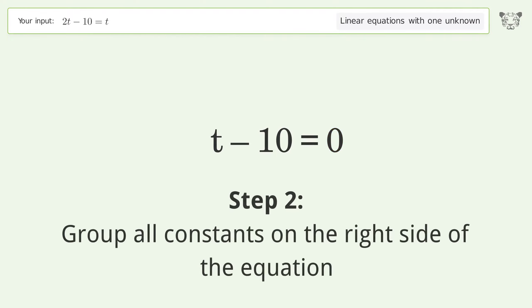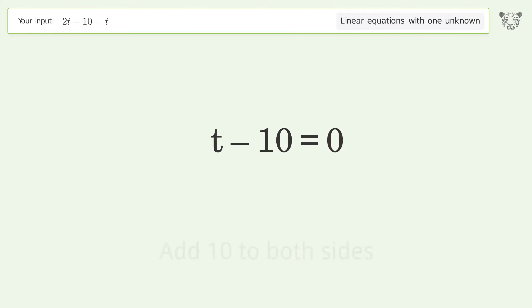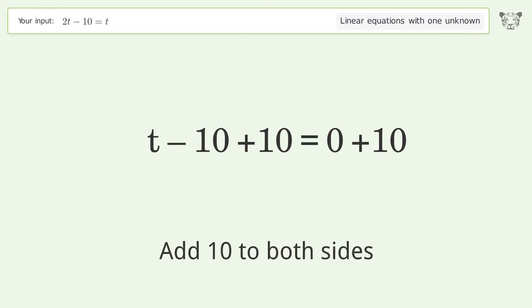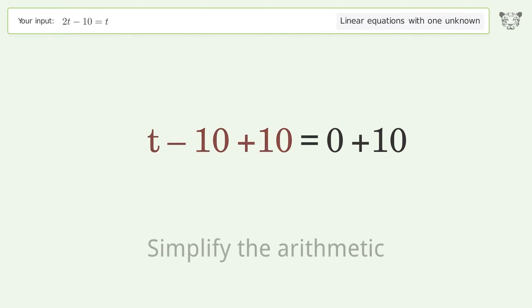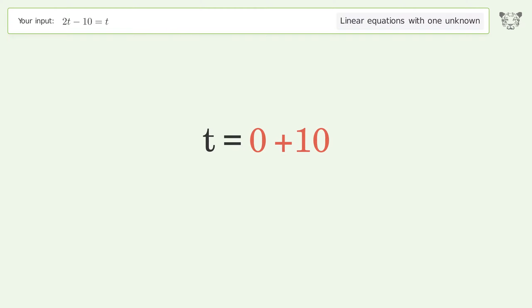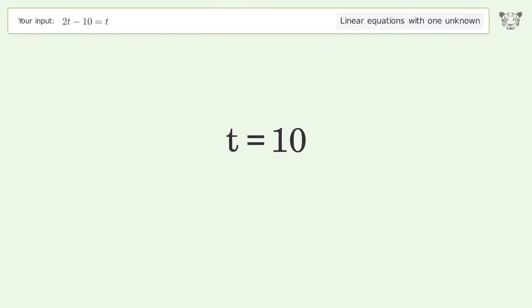Group all constants on the right side of the equation. Add 10 to both sides. Simplify the arithmetic. And so the final result is t equals 10.